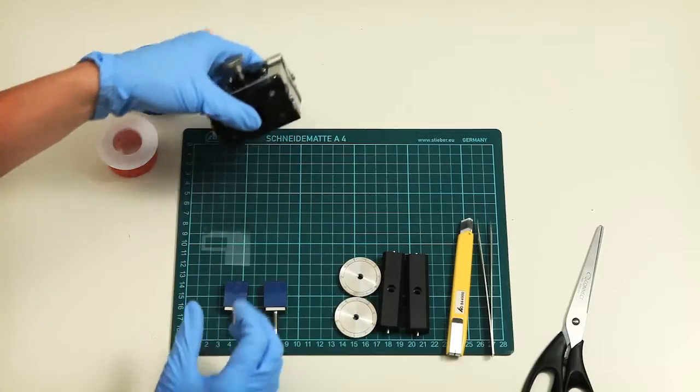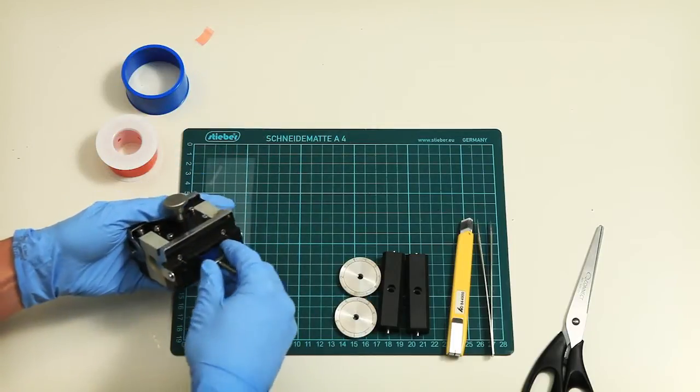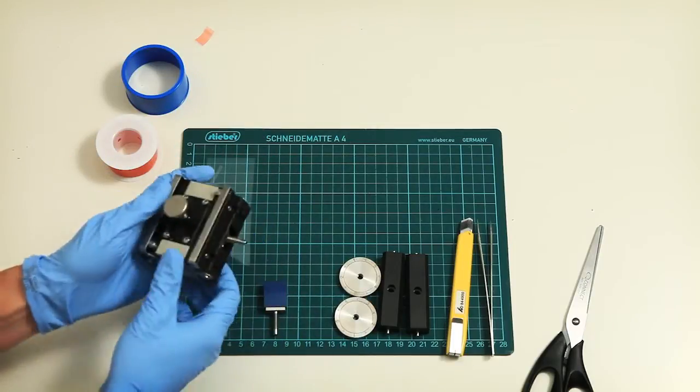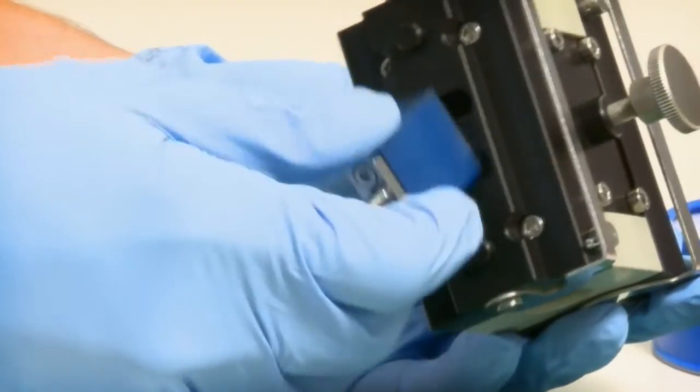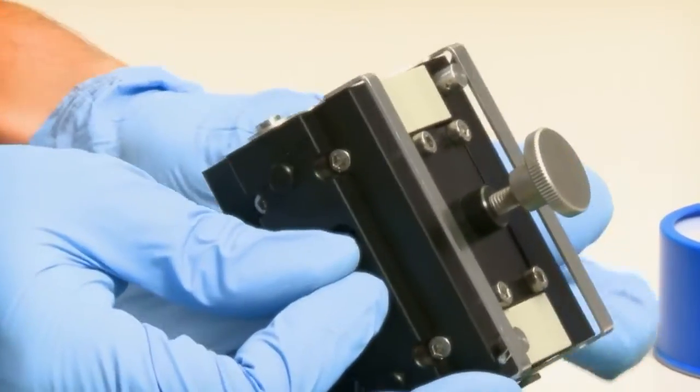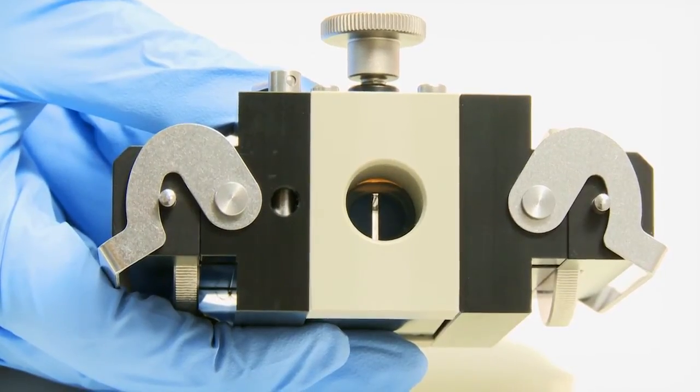Now insert the holders into the rectangular holes of the cell housing. Align the gap between the sample holders to the center of the flow channel in the middle of the cell here.